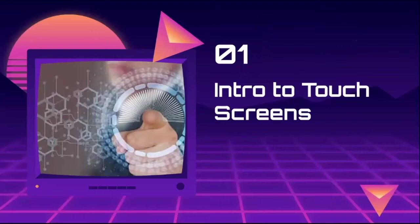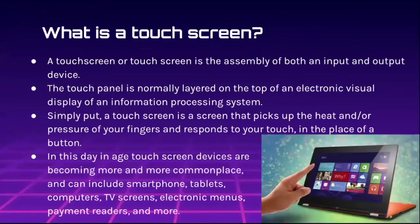A touchscreen is the assembly of both an input and output device. The touch panel is usually layered on top of an electronic visual display of an information processing system. In simpler terms, a touchscreen is a screen that picks up the heat or the pressure of your fingers and responds to your touch in place of a button. Touchscreen devices are becoming more and more commonplace and they can include smartphones, tablets, computers, TV screens, electronic menus, payment readers, and a lot more.